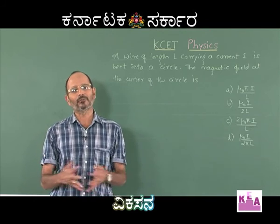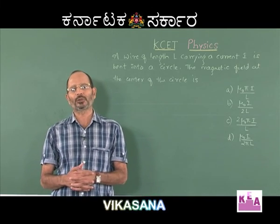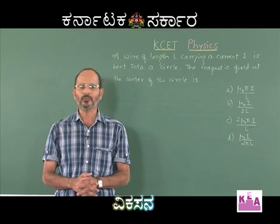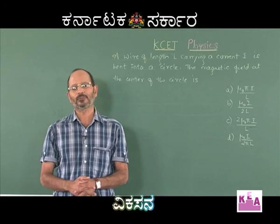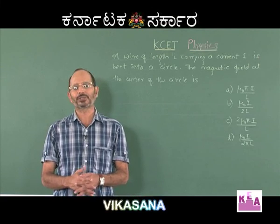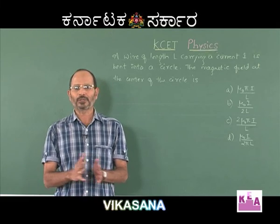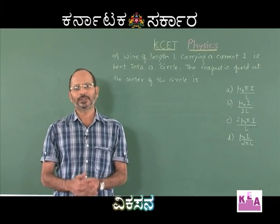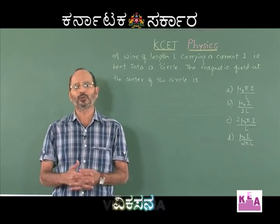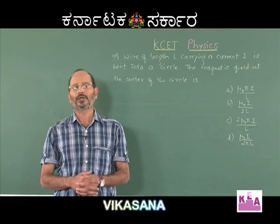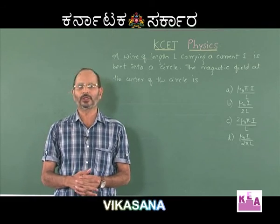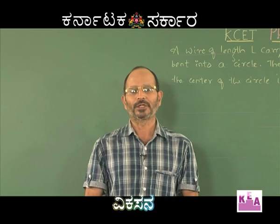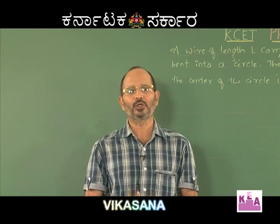As you remember, centripetal force is a must for circular motion. So qvB sinθ can be equated to mv²/r, where v is the velocity and r is the radius of the circular path. For the special case where sinθ = 1 — that is, when the velocity is perpendicular to the magnetic field — the force is maximum and the motion is circular. The radius is then given by r = mv/qB.